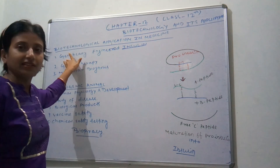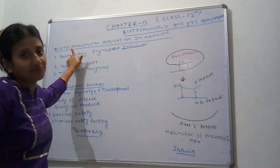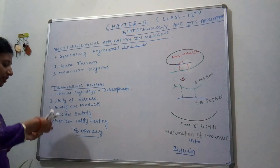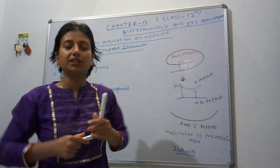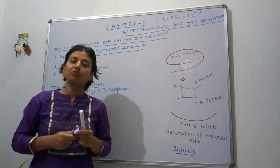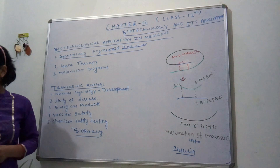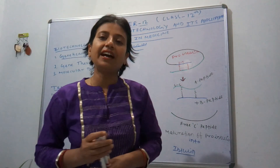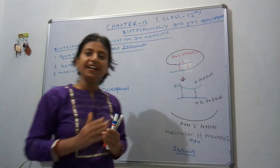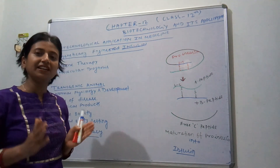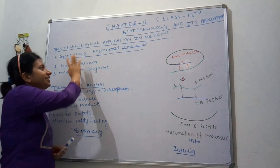This is the most interesting topic in this whole chapter and I hope you all can understand it at first. So the first topic is genetically engineered insulin. But before we study genetically engineered insulin, we have to know how biotechnological application helps in medicine. At present, 30 recombinant DNAs are developed which are used in medicine, out of which 12 recombinants are marketed in India. One of them is genetically engineered insulin.